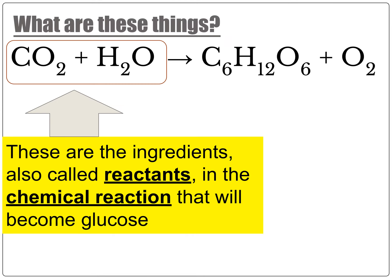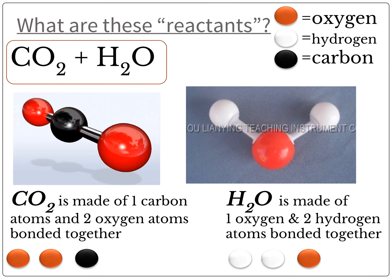What are these things? These things in our chemical reaction are called the reactants. Anything on this side of the arrow — the arrow is pointing away from this side — is called the reactants. They are what are going into the chemical reaction, and you could almost think of them like the ingredients in a chemical reaction.